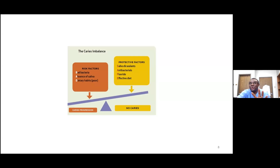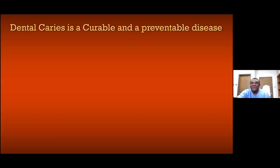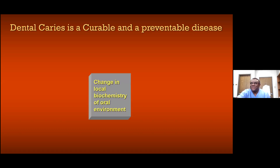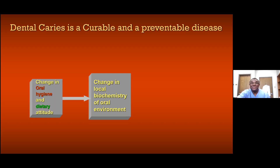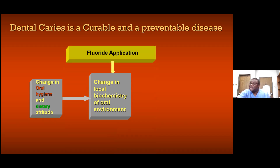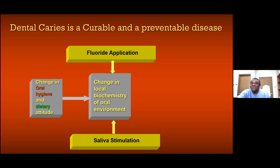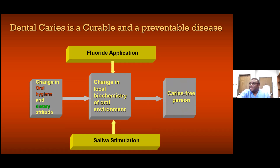Our advice to patients will always be geared towards increasing the protective factors. Caries is a curable and preventable disease. The simple way to cure and prevent it is by changing the local biochemistry of the oral environment — changing oral hygiene attitude, changing dietary attitude, ensuring adequate fluoride use, and ensuring adequate saliva flow. If you can get your patient to have all four of these factors, you will have a caries-free person.